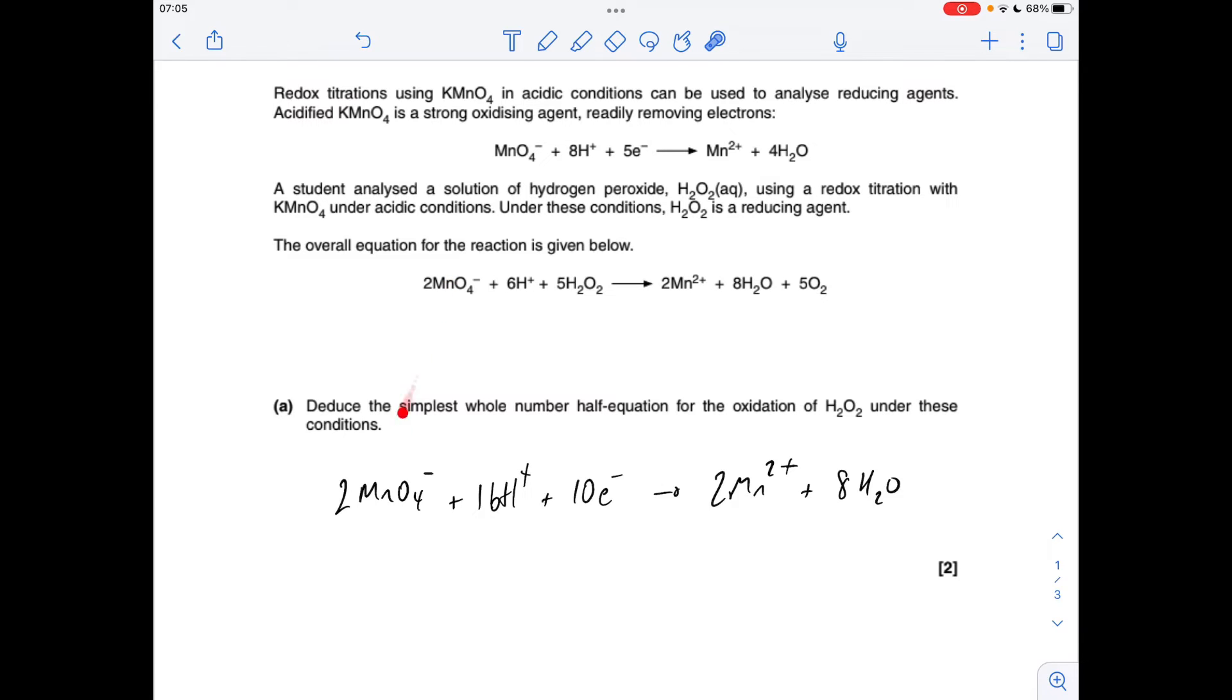So 2MnO4 minus, that's fine. 6H plus in the overall, but we've got 16 here. So I'm going to put 10H plus on the right-hand side. So when we add these together, this will go down to 6.